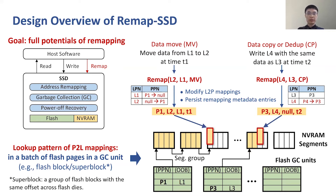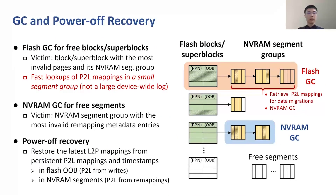For each remap operation, the metadata entry is written to the segment group of the relevant flash GC unit in an append-only manner. Then, during each flash GC operation, only a small NVRAM segment group is scanned for lookups of P2L mappings rather than a large device-wide log. In addition, RemapSSD reclaims invalid entries in NVRAM segments when flash GC operations occur and when free segments run out. For power-off recovery, RemapSSD can always restore the latest L2P mappings from persistent P2L mappings and timestamps in flash OOB and NVRAM segments.